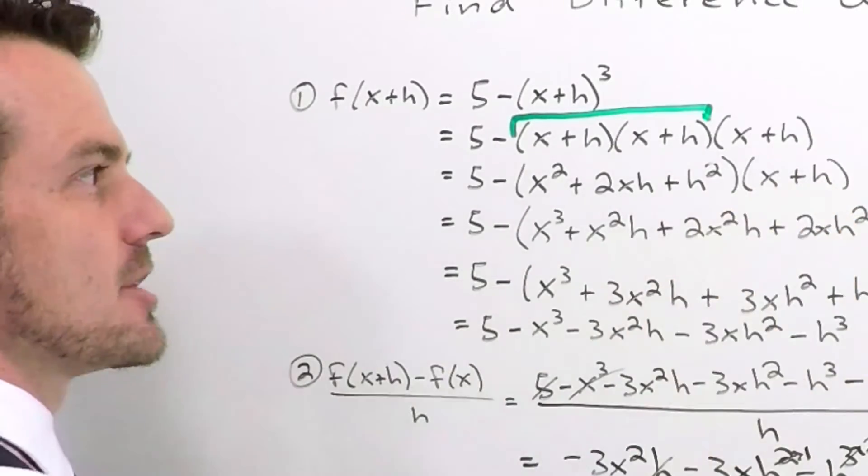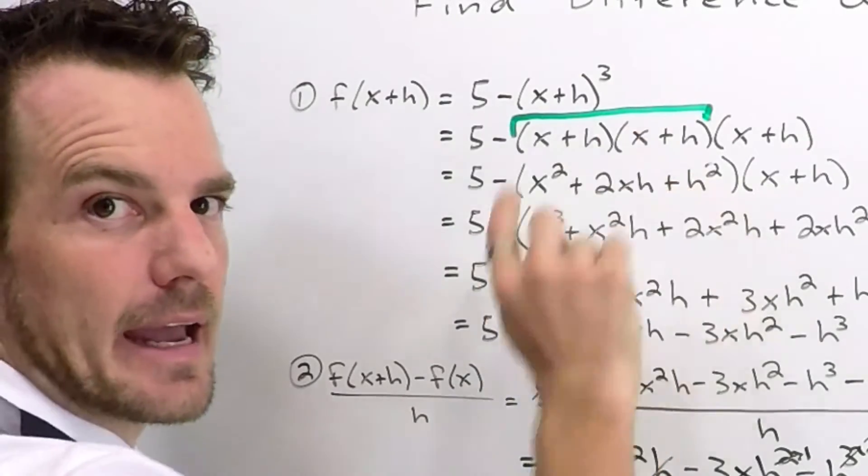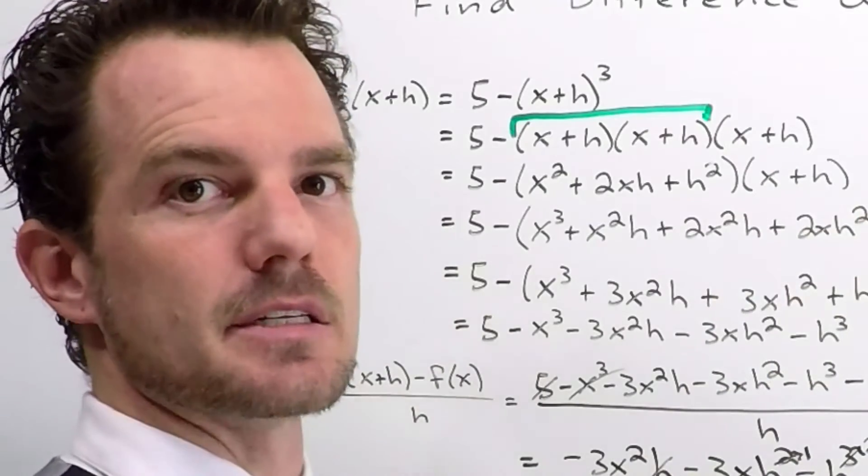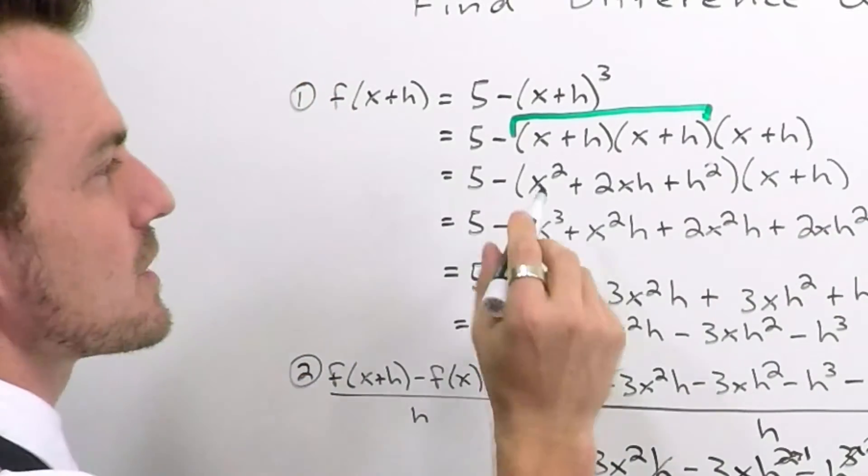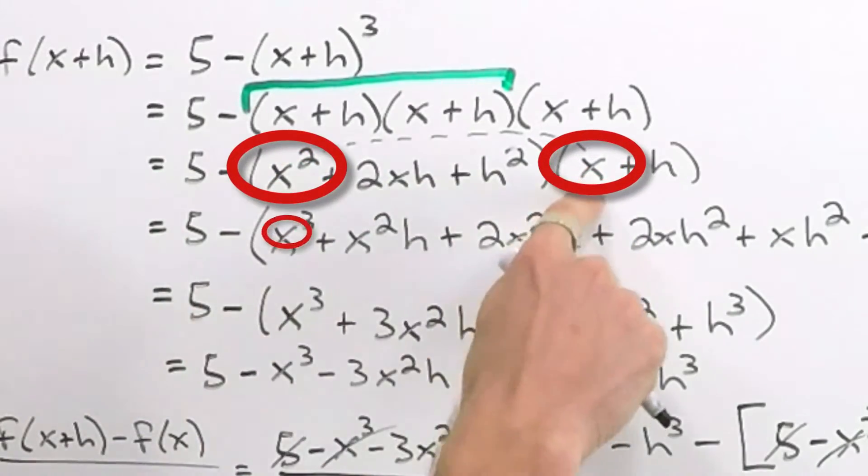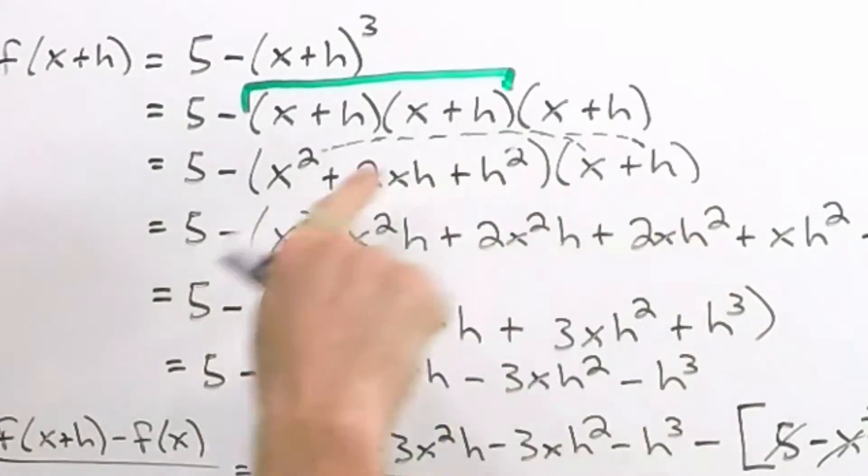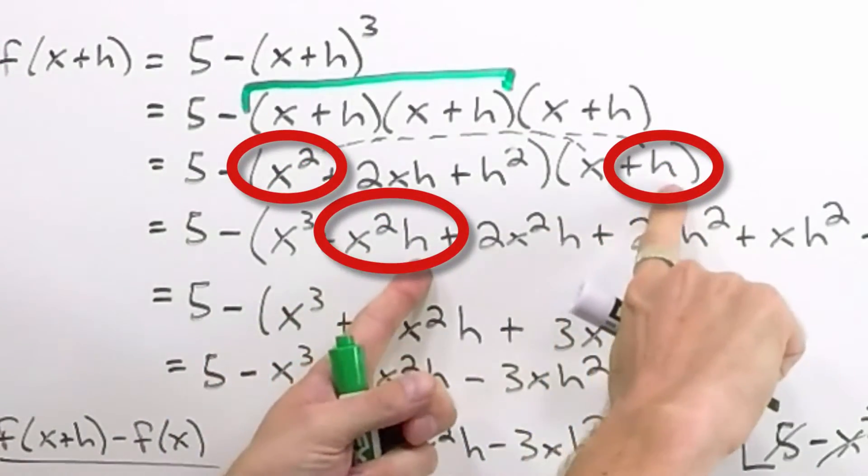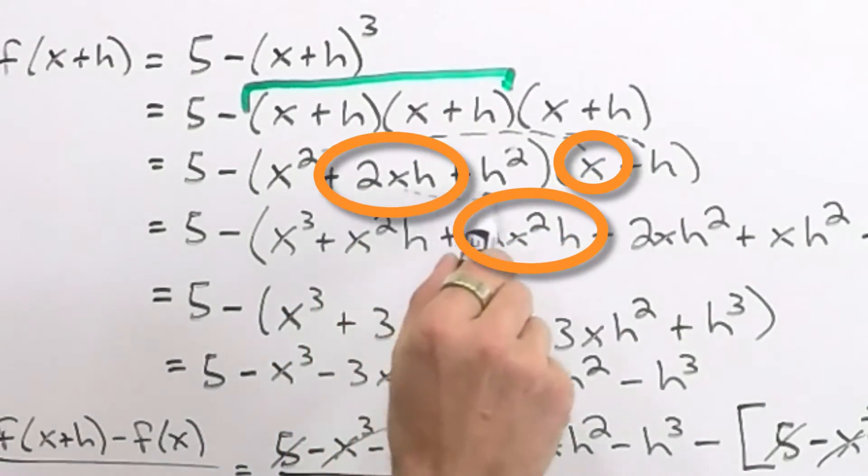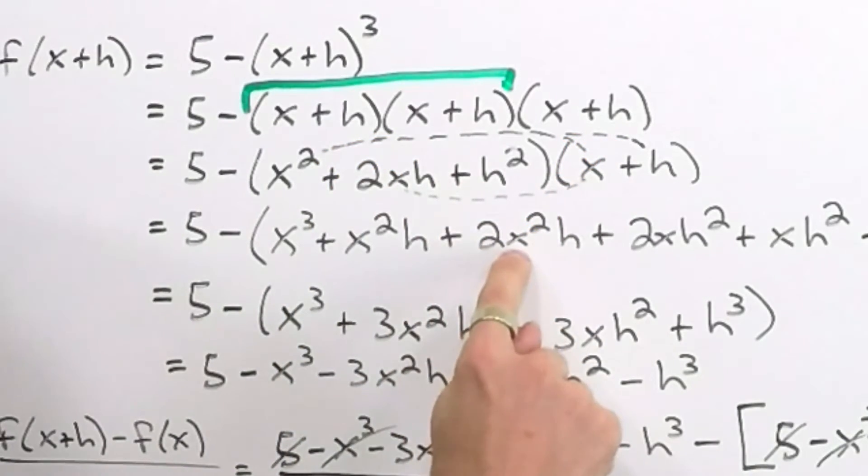And now we've still got this x plus h, which means we need to take each component here and distribute, multiply it onto each component of the second set of parentheses. So what's going to happen is we're going to get this x multiplying this x, which means x squared times x will give us x cubed. Then we come back and let this x squared touch the h. So we'll have an x squared and then h. After that, we've got to come back to the two x h and let it come over and multiply the x. So the x's will multiply to give us two x squared h.